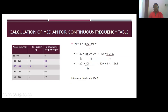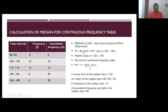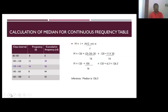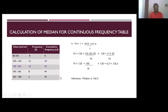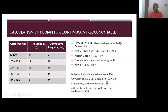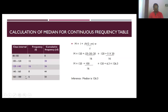So: L = 120, n/2 = 25, m (cumulative frequency just before median class) = 20, class width w = 20, frequency f = 16. Median = 120 + ((25 - 20) / 16) × 20 = 120 + (5 × 20)/16 = 120 + 100/16 = 120 + 6.3 = 126.3. So the median is 126.3.